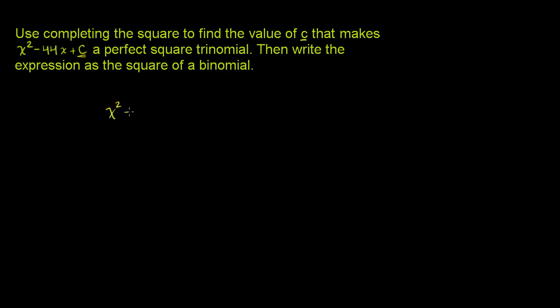So we have x² - 44x + c. How do we make this into a perfect square? Well, if you look at the traditional pattern for a perfect square, let's think of it in terms of (x + a)².